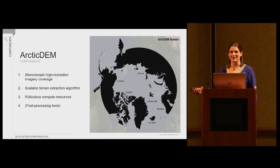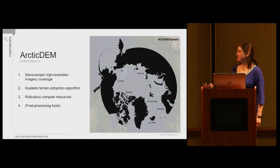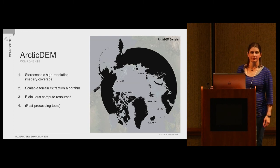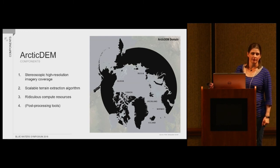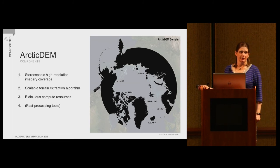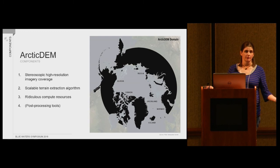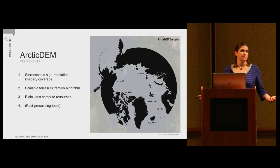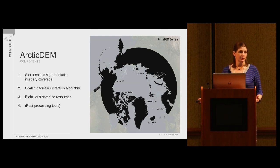This is the Arctic DEM domain — everything north of 60 degrees essentially, along with some extra fun stuff thrown in. The reason we chose this is because everything south of 60 degrees and north of 60 degrees south was covered by other satellite missions that have got pretty good topography for temperate regions, but the polar regions were left out.